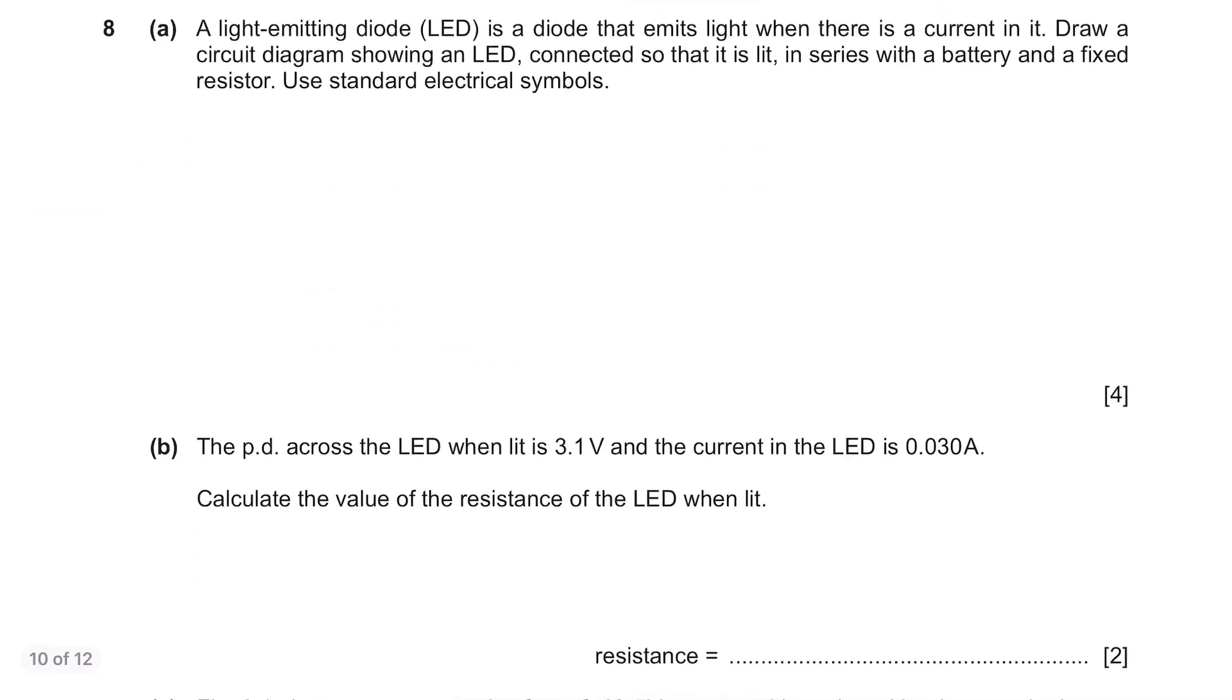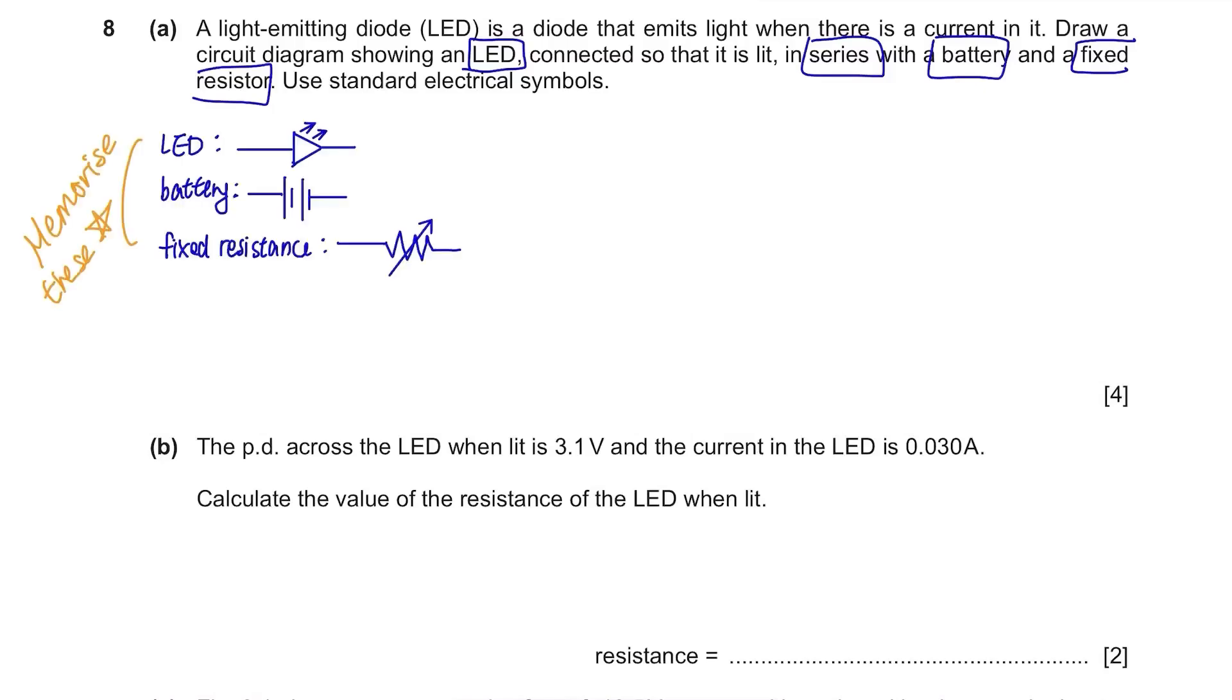Question 8, Part A. A light emitting diode LED is a diode that emits light when there is a current in it. Draw a circuit diagram showing an LED connected so that it is lit in series with a battery and a fixed resistor. Use standard electrical symbols. You will have to know the symbols of an LED, a battery and a fixed resistor to draw this. These are the symbols. They need to be connected in series so connect them in one line.